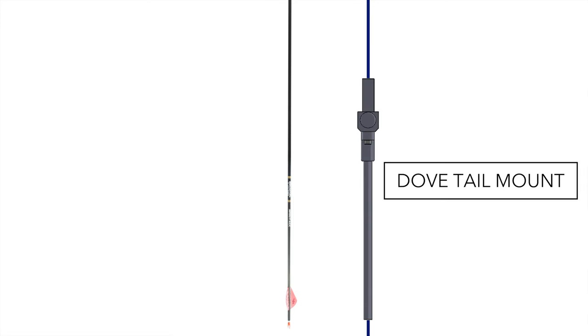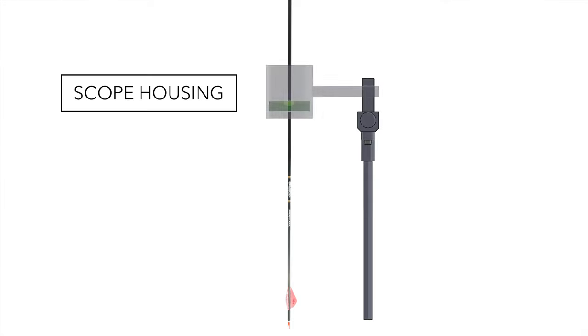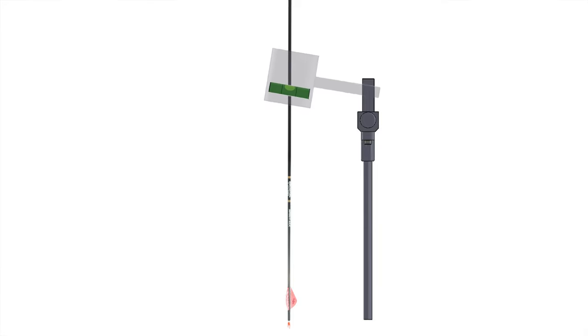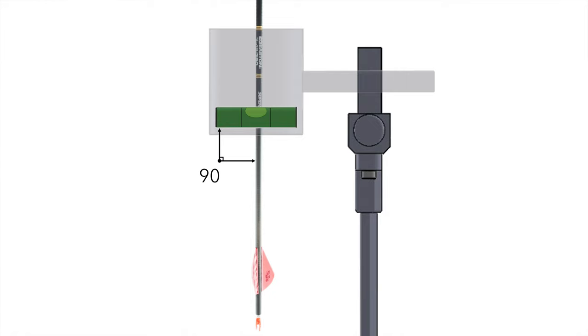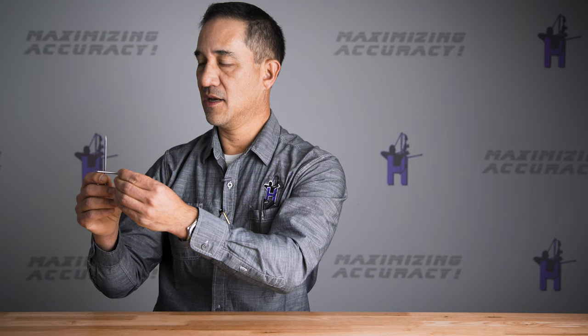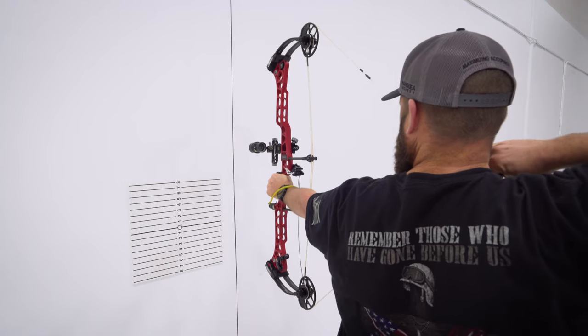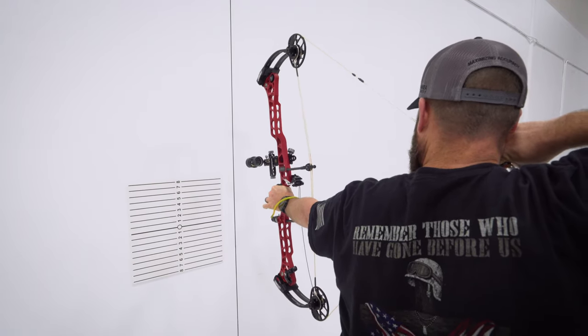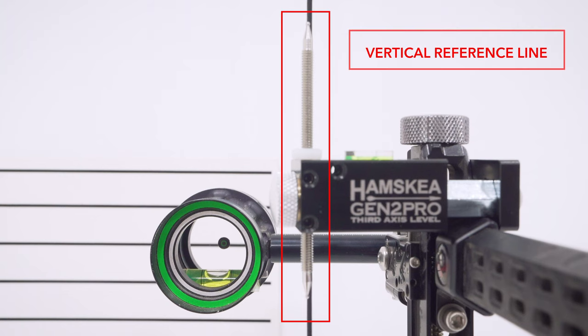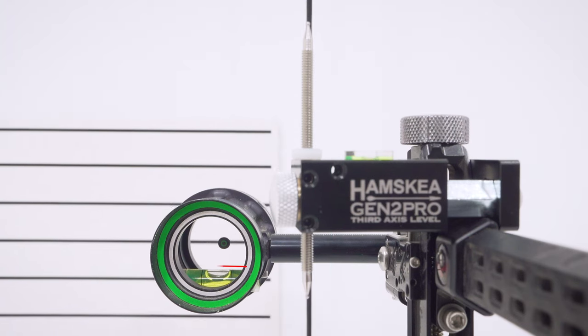Third axis is your second axis and its orientation to the arrow. The arrow is always pointing at the target, so you want your bubble vial to always be perpendicular to the line of sight — or the arrow. If my arrow is pointing directly at you and my second axis is off, maybe nothing happens on flat ground, but as soon as I shoot up or downhill, the bubble runs out left and right because it's not perpendicular to my arrow.